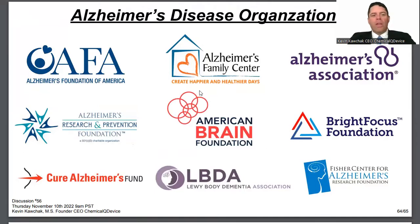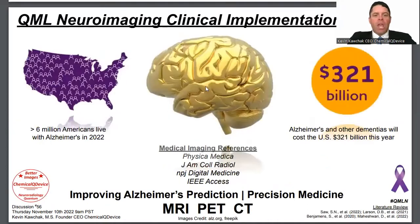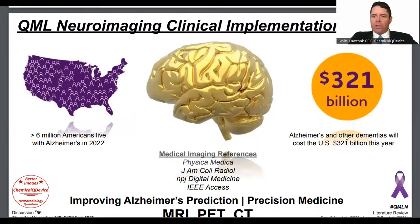So this was the presentation. Here are the stats: over 6 million Americans live with Alzheimer's in 2022, and the $321 billion cost of Alzheimer's and other dementias, with Alzheimer's being the primary component.